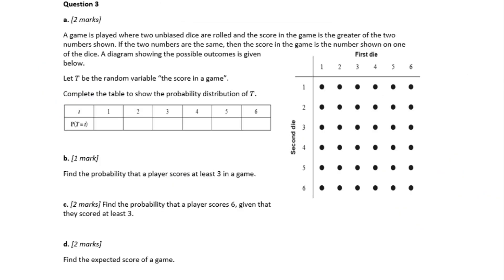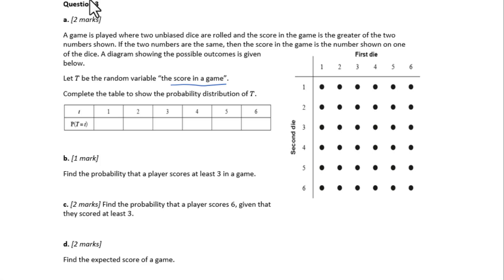Let's go to question 3. A game is played where two unbiased dice are rolled and the score in the game is the greater of the two numbers shown. If the two numbers are the same, then the score is the number shown on one of the dice. A diagram showing the possible outcomes is given below. Let T be the random variable for the score in the game. Complete the table to show the probability distribution of T. The score is the greater of the two numbers — we list scores for the first and second dice.